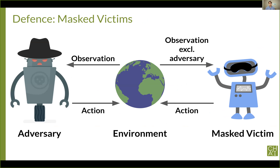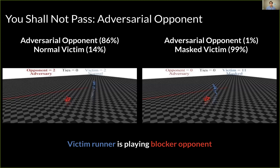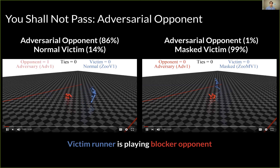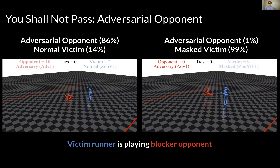Since the attack works by inducing unusual observations that are adversarial to the victim — not by physically interfering with it — we wondered if hiding the adversary from the victim would work as a defense. We constructed a masked victim that cannot see the opponent: it is exactly the same as the original victim, except the portion of the observation consisting of the opponent's position is set to a static value corresponding to the opponent's typical initial position. The adversarial opponent wins 86% of the time against the unmasked victim, but only 1% against the masked victim. A similar pattern holds in the other environments.